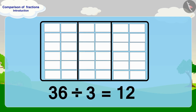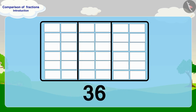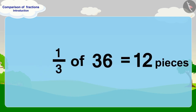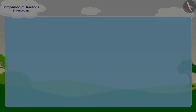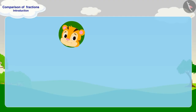In this way, one third of 36 is 12. Golu wrote his name on 12 pieces of paper.